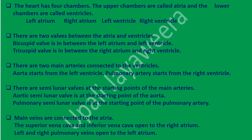The heart has four chambers. The upper chambers are called atria and the lower chambers are called ventricles. There are two valves between the atria and ventricles. The bicuspid valve is between the left atrium and left ventricle. The tricuspid valve is between the right atrium and right ventricle.